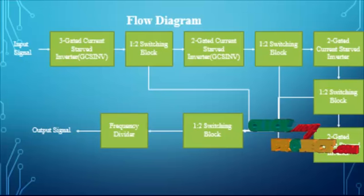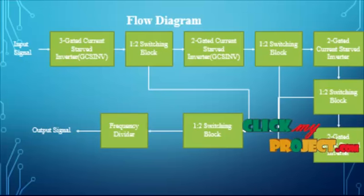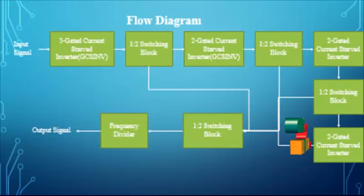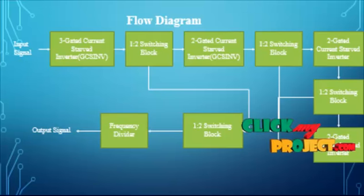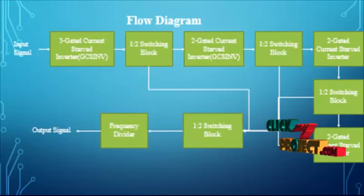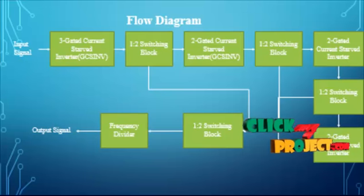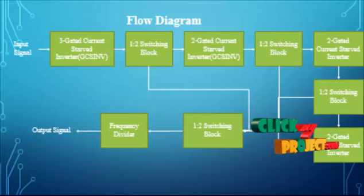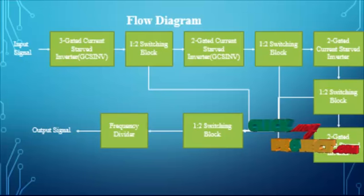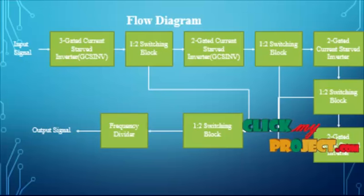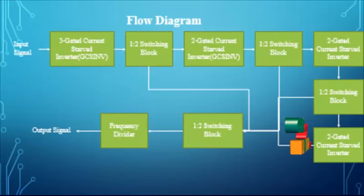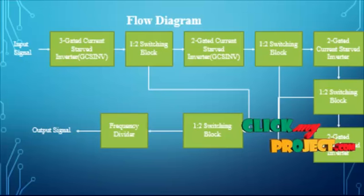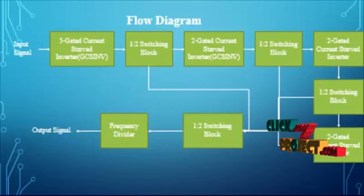Second, two gated current starved inverters are directly applied into the one-to-two switching block. The same process is obtained in this switching block. These switching blocks are continuously applied and finally fed into the frequency divider circuit. In this frequency divider, it is implemented using a D flip-flop, called a divide-by-two D flip-flop, denoted as DP2. The output can be selected from the oscillator or any of the DP2 circuits. The resulting output frequency is the oscillator frequency divided by two to the power of the number of DP2 stages, zero to seven.